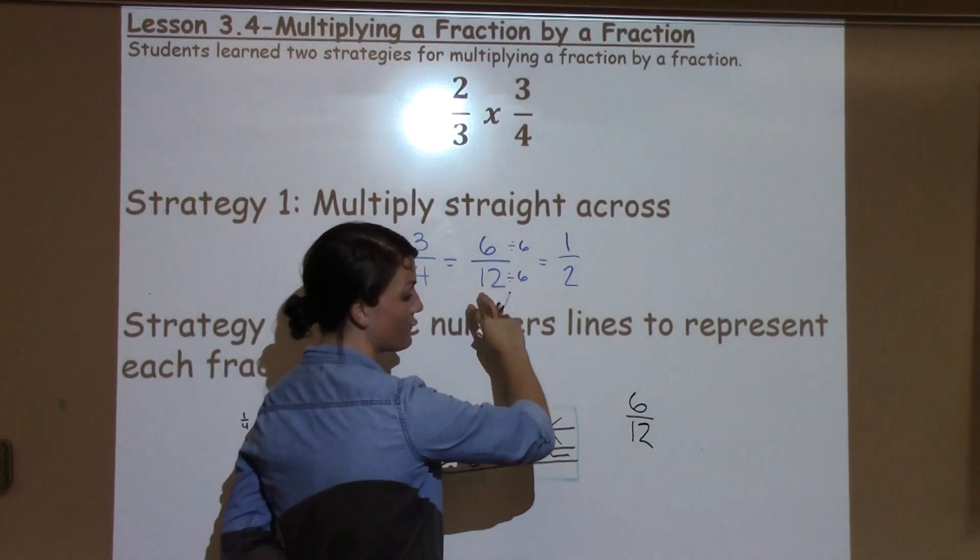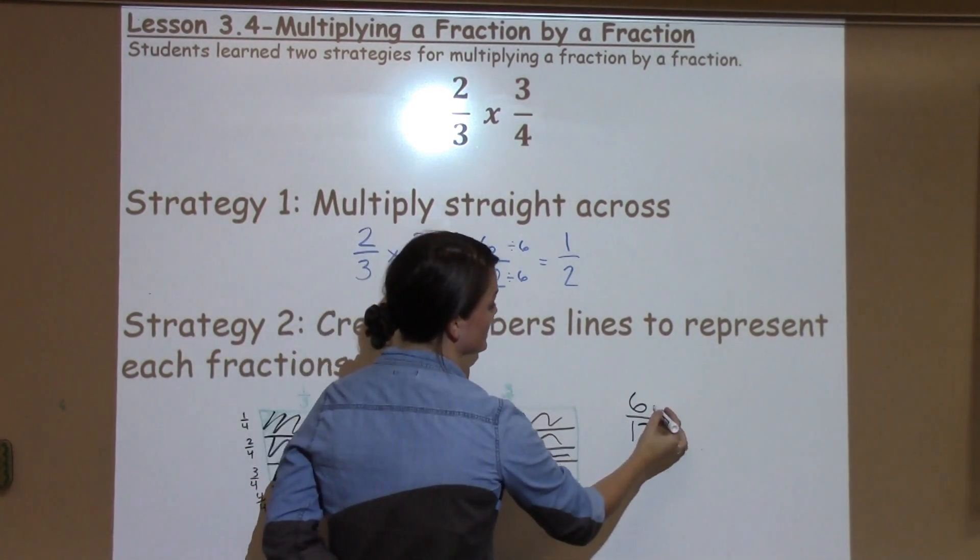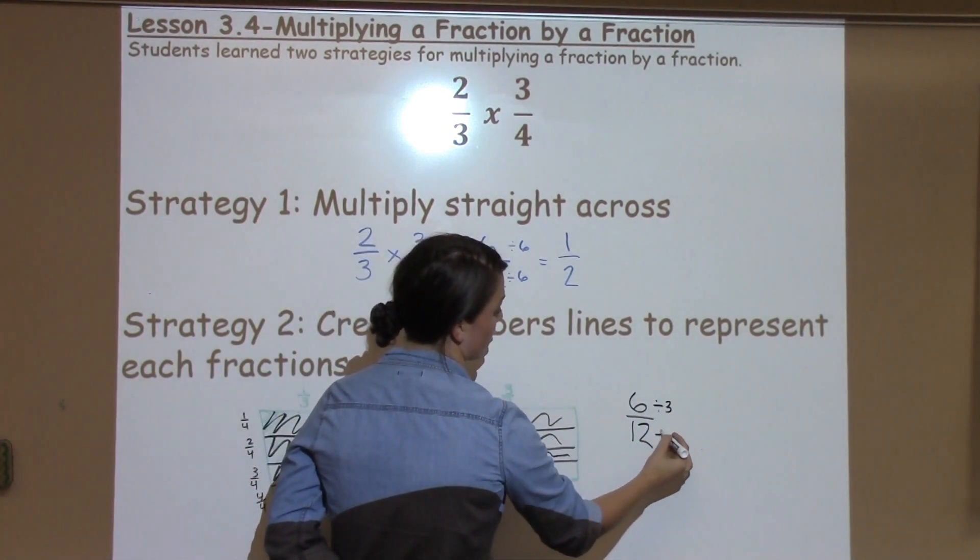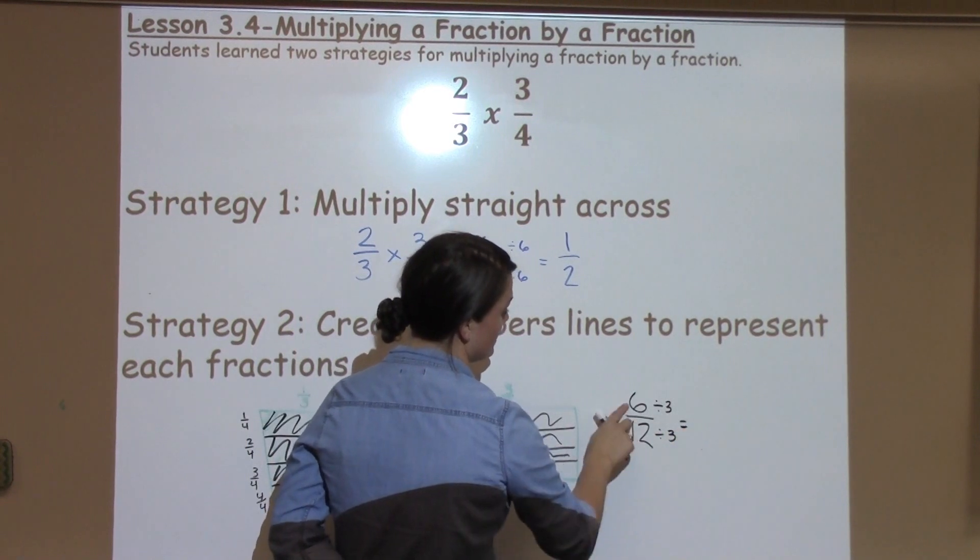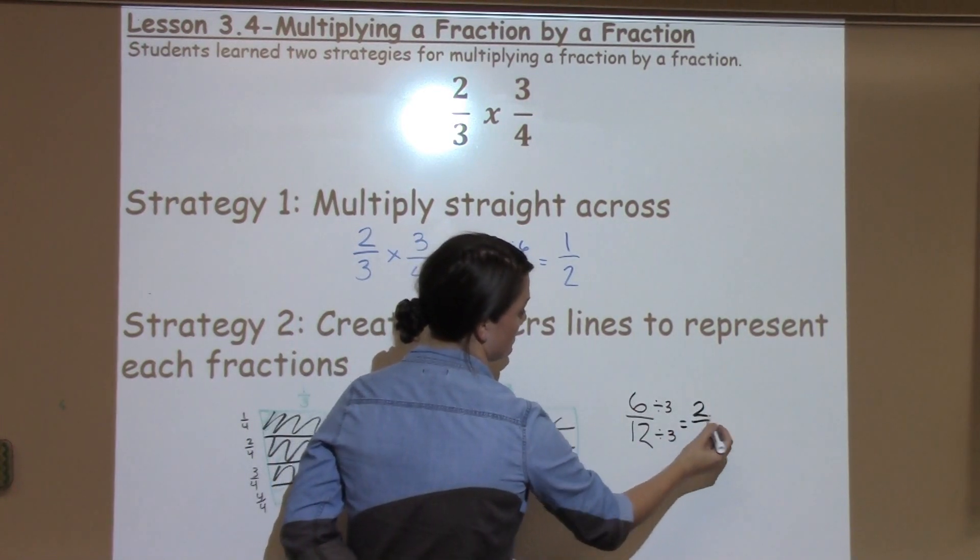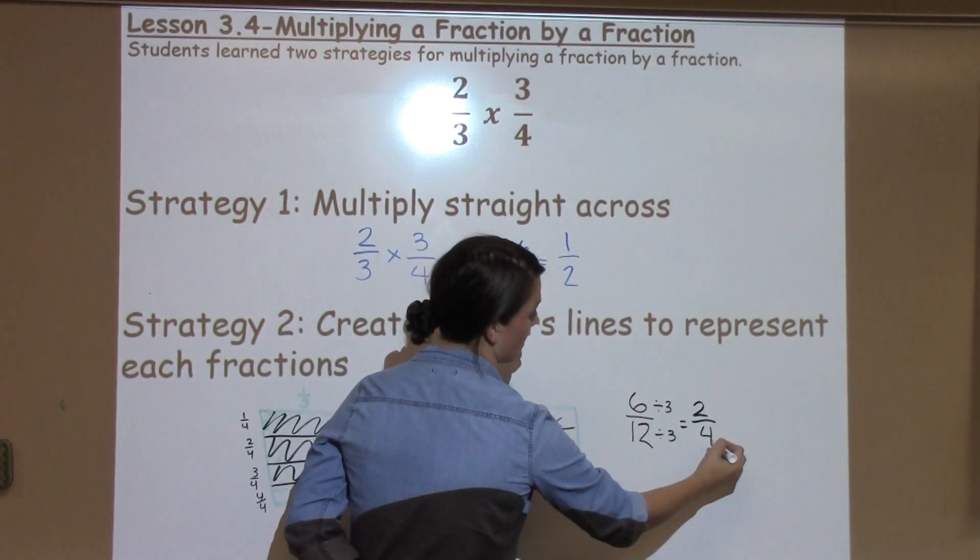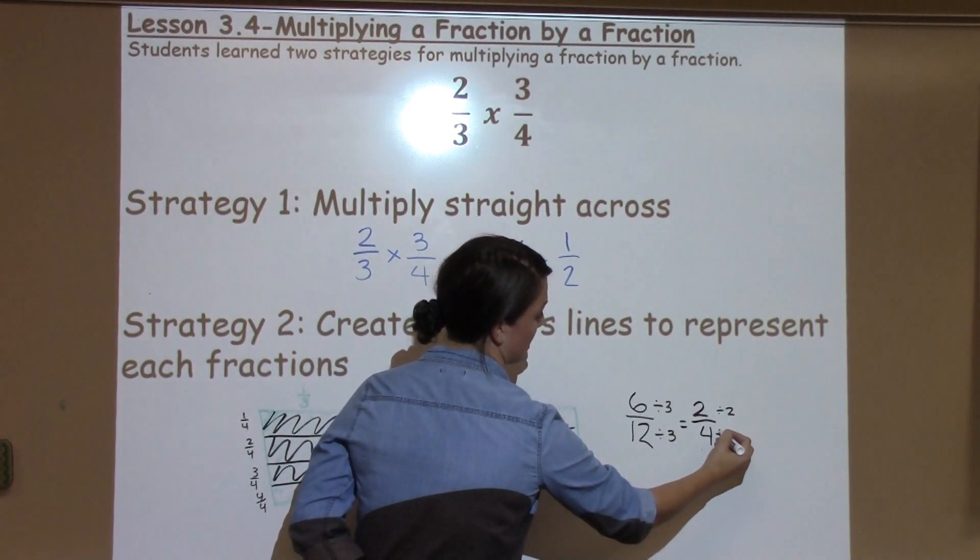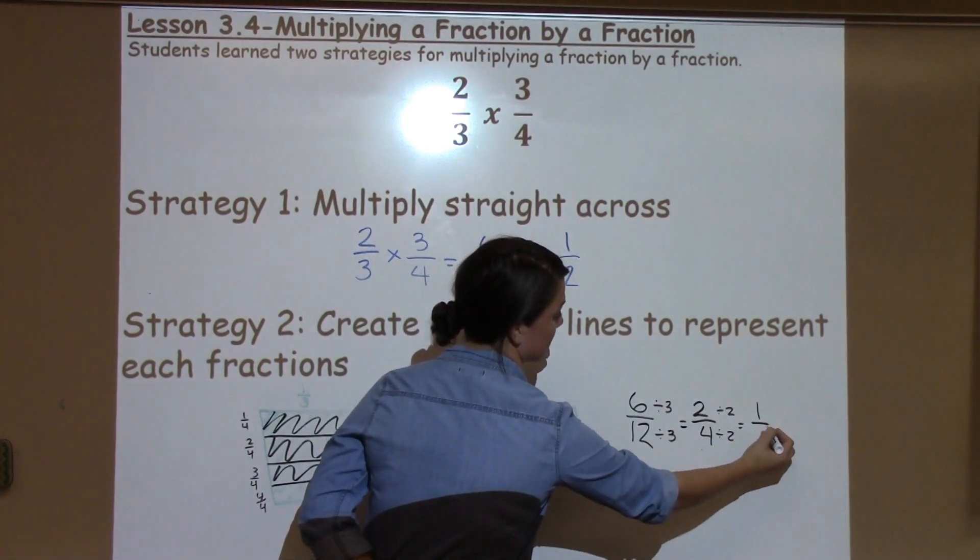Notice it's the exact same answer as before. This time, I'm going to divide by something different. I'm going to divide by 3 to make this answer smaller. 6 divided by 3 is 2. 12 divided by 3 is 4. And again, I could divide it down even more to make it simpler.